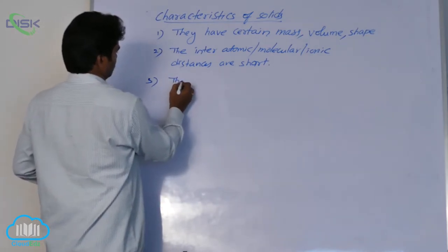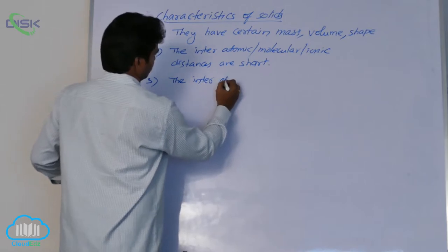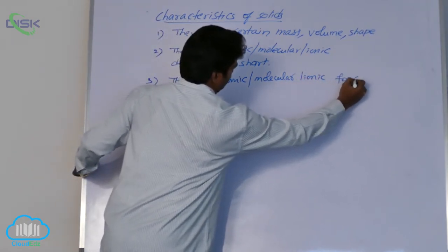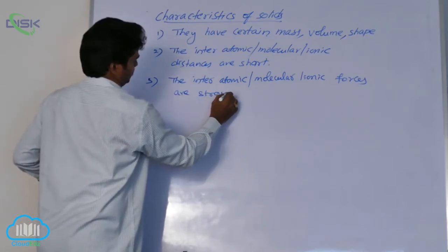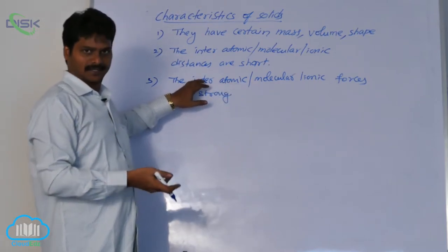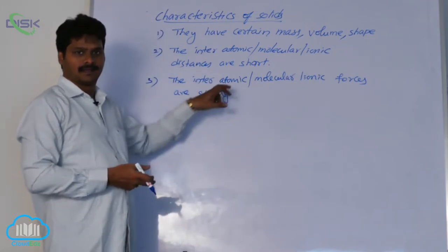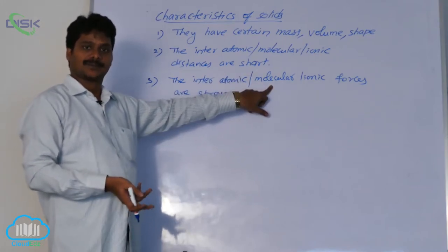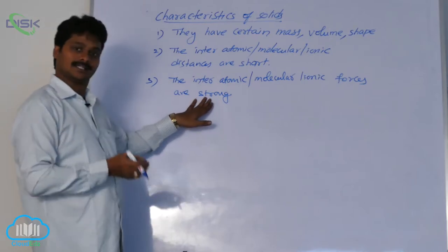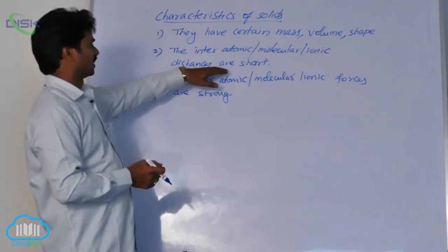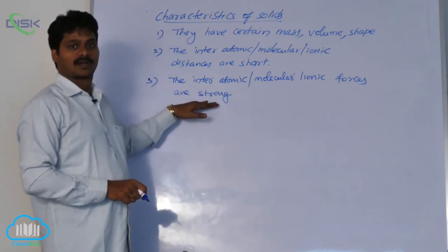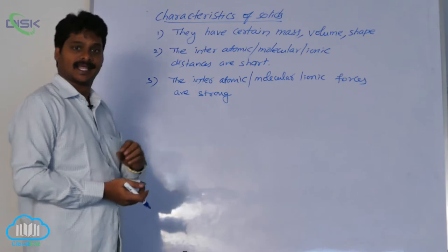Third one, the intermolecular forces — interatomic, molecular, or ionic forces — are stronger in solids than in liquids and gases. In metals, we have interatomic forces; in compounds, intermolecular forces; in ionic compounds, interionic forces. In solids, these forces are very strong and the interparticle distances are very short compared to liquids and gases.